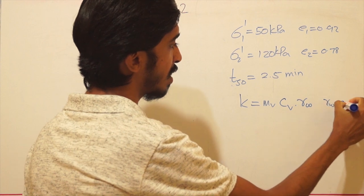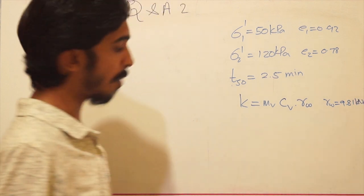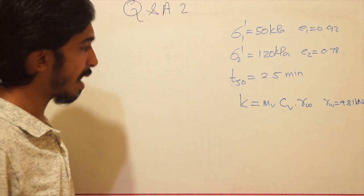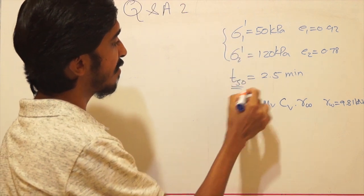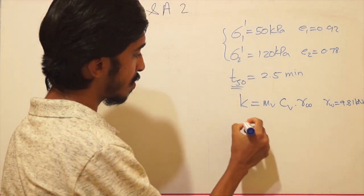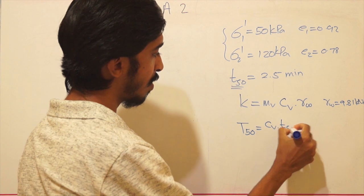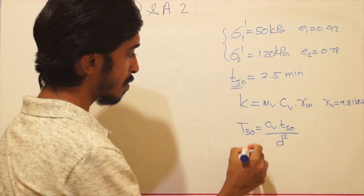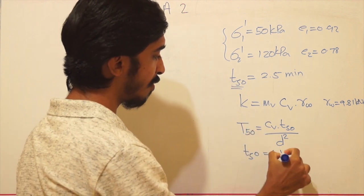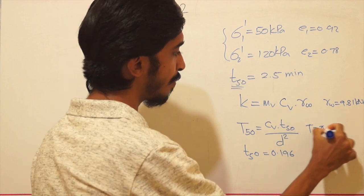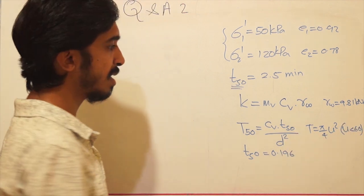From Terzaghi's one-dimensional theory: k = mv × cv × γw, where γw = 9.81 kN/m³. To solve this, we need to calculate both mv (coefficient of volume compressibility) and cv. To find cv, we use T50 = cv × t50 / d².